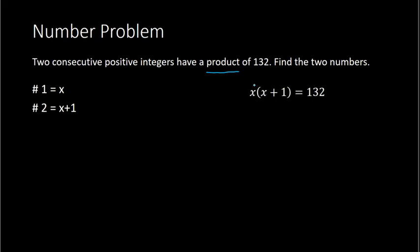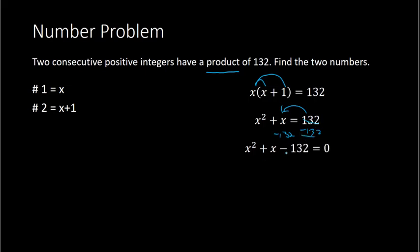To solve this, I can begin by distributing. So x times x and x times 1 would be x squared plus x. And then from here, I want to set this equal to 0. So if I bring the 132 to the left side, I can do that by subtracting 132. And now we have x squared plus x minus 132 equals 0.